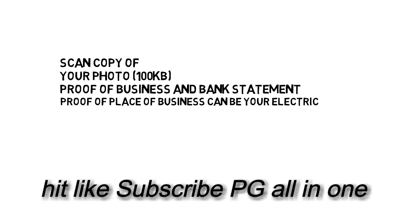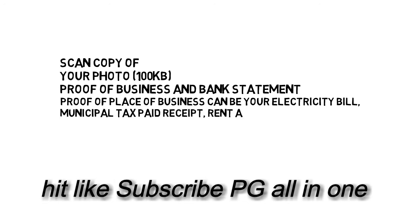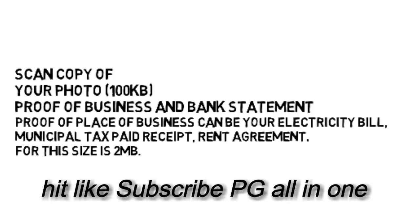Proof of place of business can be your electricity bill, municipal tax paid receipt, or rent agreement. The file size of the scanned copy should be below 2 MB. If you work online and don't have a registered place for your business, then you can attach your own electricity bill, but make sure the address of the place of business and the address on the electricity bill are the same. In case you have a place of business that is your own, attach the electricity bill of that place. But if it is not your own, then please make a rent agreement. Please note: having appropriate and correct documents for GST registration can save your application from any future risk.